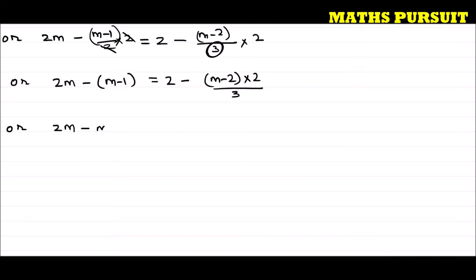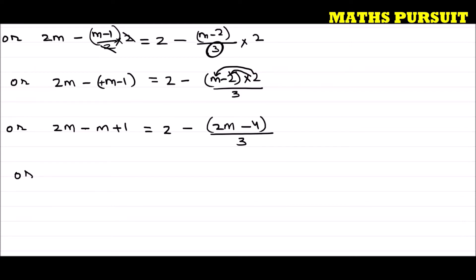Opening the bracket: 2m minus m plus 1. Because minus times plus m is minus m, and minus times minus 1 is plus 1. This equals 2 minus 2(m minus 2) upon 3. So 2m minus m gives us m. We get m plus 1 is equal to 2 minus (2m minus 4) divided by 3.